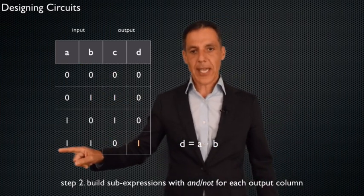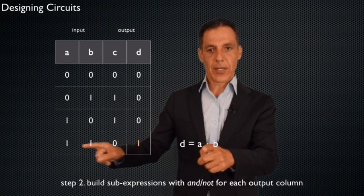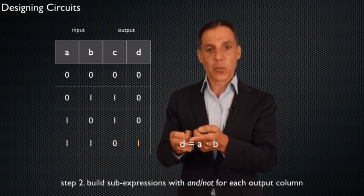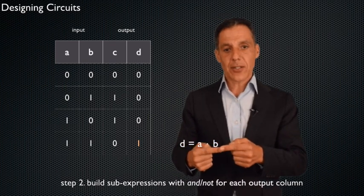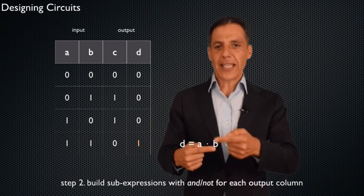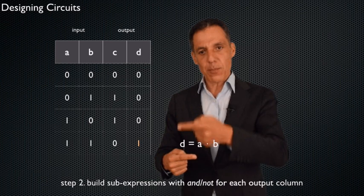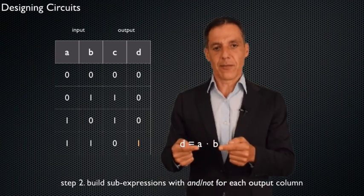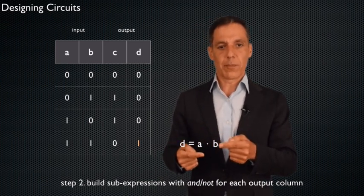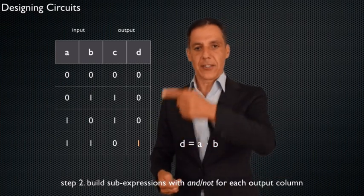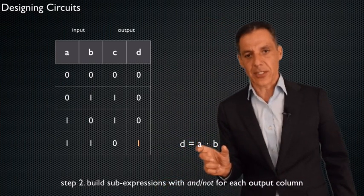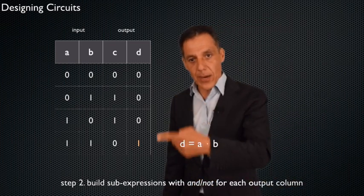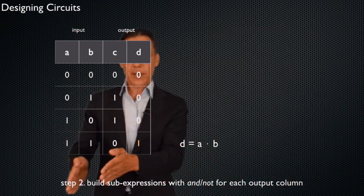When A is one and B is one, the output is one. For free I get all the other rows, because for all other instances — when A is zero or B is zero or both are zero — I get a zero. So this little AND expression embodies that entire output column for those two inputs.